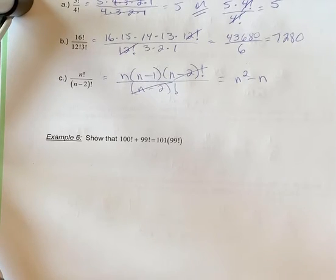Example 6: Show that 100 factorial plus 99 factorial equals 101 times 99 factorial. This is an interesting one to prove.